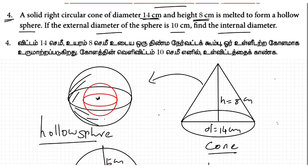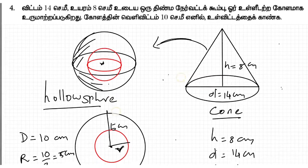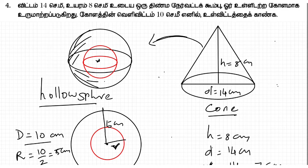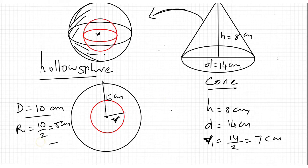Right circular cone. Okay, this melts to a sphere. Then, the outer diameter is 10 cm, so outer radius is 10 by 2, that is 5 cm.